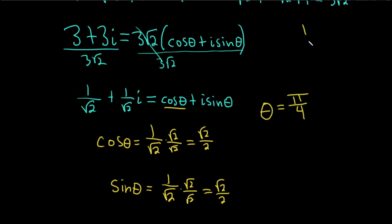And that makes sense. If you look at 3 plus 3i, it should be like right here somewhere. 3 plus 3i. So, yeah, it looks to me like it's 45 degrees, which is pi over 4.